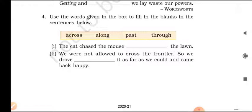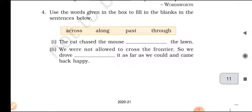Sentence one: The cat chased the mouse across the lawn. Sentence two: We were not allowed to cross the frontier, so we dropped along it as far as we could and came back happy.